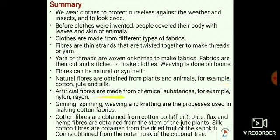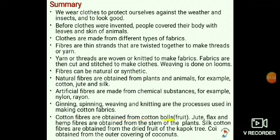Artificial fibers are made from chemical substances — for example, nylon, rayon, and polyester. Ginning, spinning, weaving, and knitting are the processes used in making cotton fabrics. Cotton fibers are obtained from cotton balls. Jute, flax, and hemp fibers are obtained from the stem of the plants. Silk cotton fibers are obtained from the dried fruit of the kapok tree. Coir is obtained from the outer covering of coconuts.